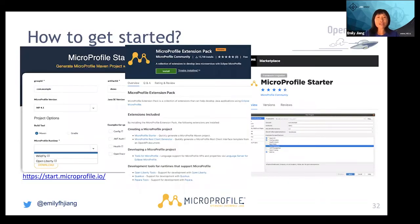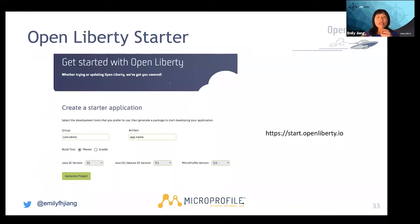Let me give you a quick demo about how to create cloud native applications. First, let me briefly talk about how to get started. Luckily, we have a starter at start.microprofile.io. OpenLiberty also has a starter at start.openliberty.io where you can create cloud native applications, specify the Liberty version and MicroProfile version, and it will generate a cloud native application for you.